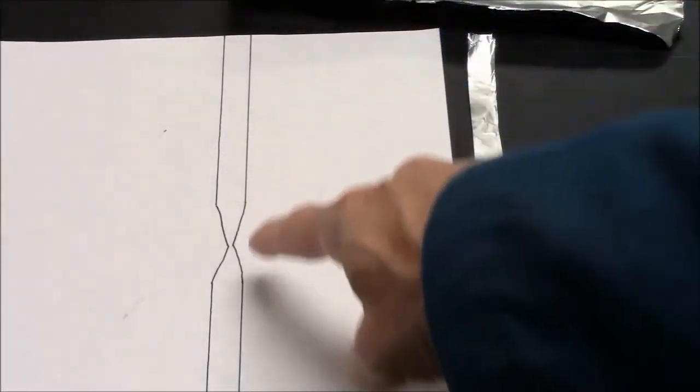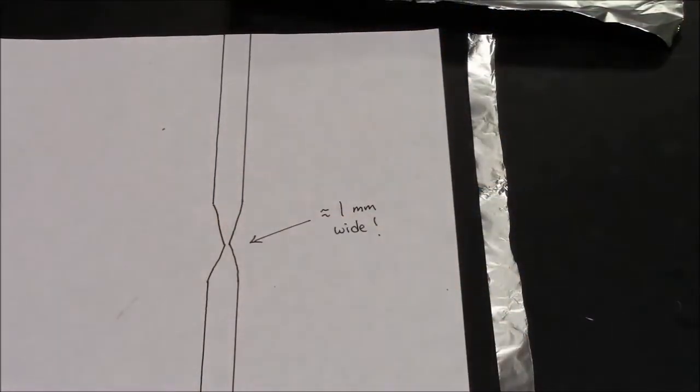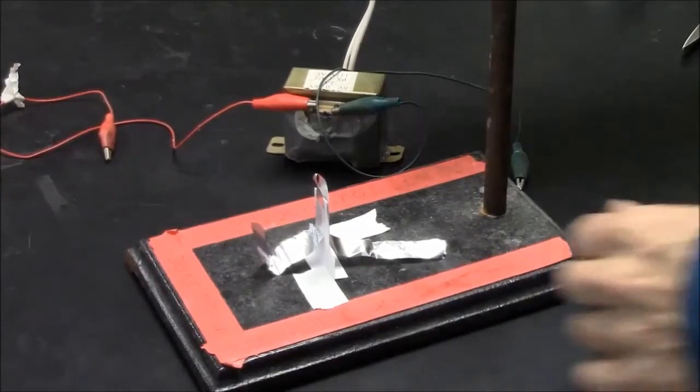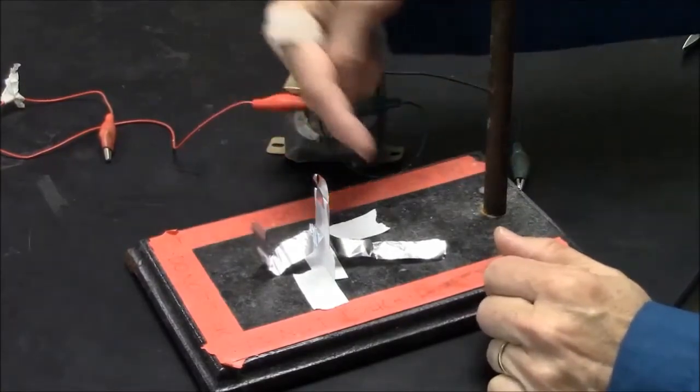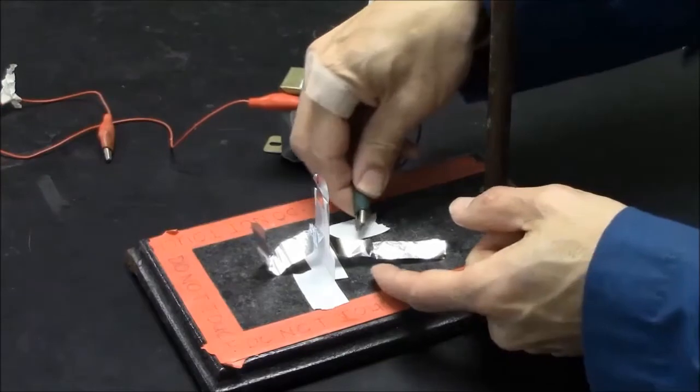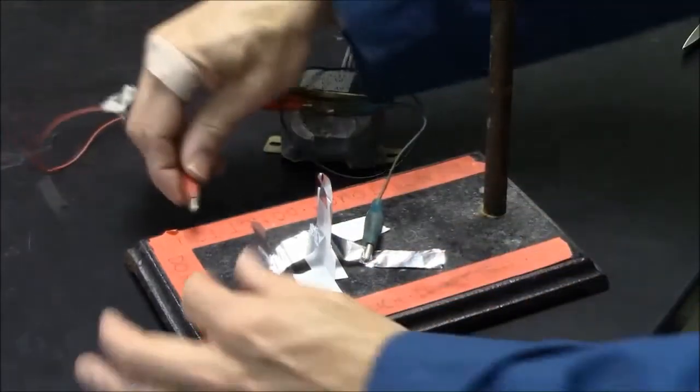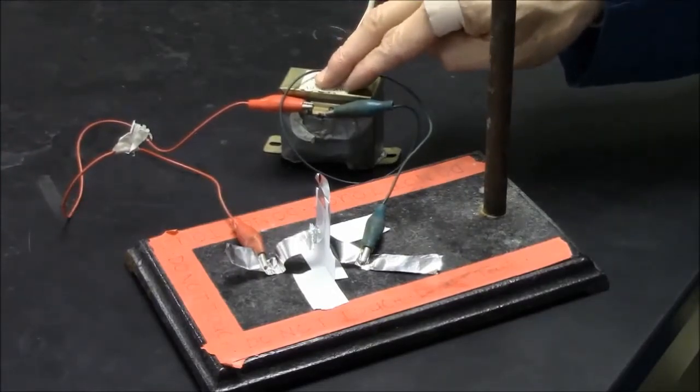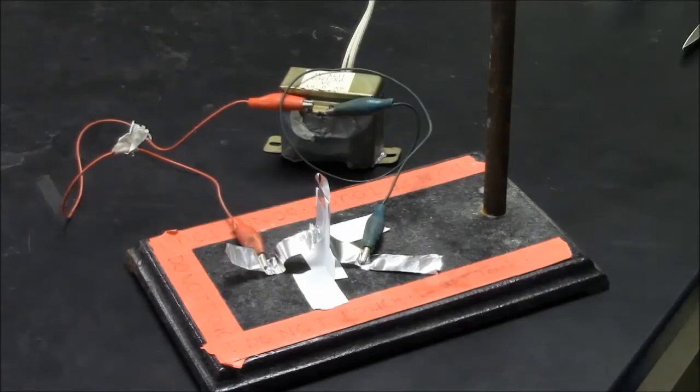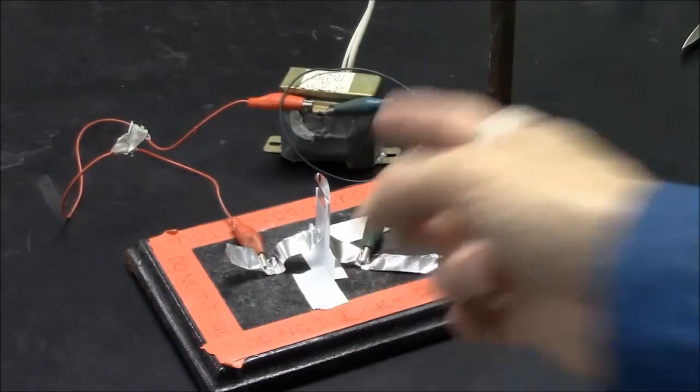When the electricity goes through the aluminum, the very thin part will get very hot and will spark. To make the igniter spark, I need to pass electricity through the foil. This is a 12 volt transformer. I'll make connections on each side of the igniter. At this time, the transformer is not plugged in, so no electricity is flowing. However, I will now plug in the electrical and will look for a spark right here at the tip.